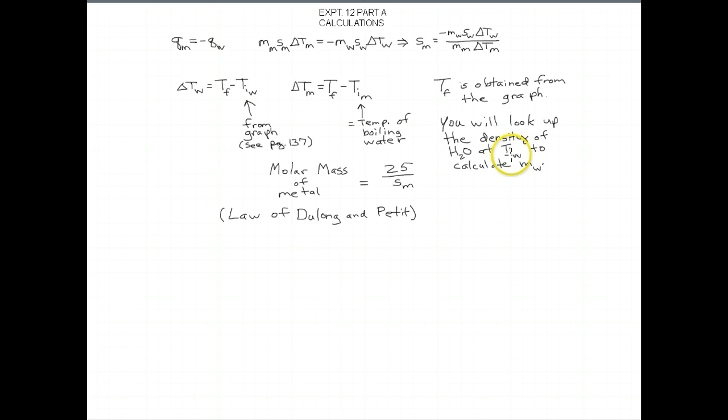Remember the initial temperature of the water is where that blue line crosses the red line. Look up that temperature in the CRC handbook in the lab, that will be your initial temperature of the water, and you'll use the density to find the mass.